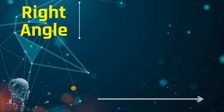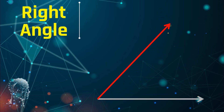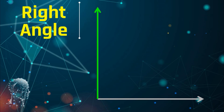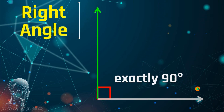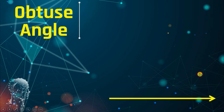Next, we have the right angle. A right angle is an angle with a measure of exactly 90 degrees. You will know it is a right angle because of the special square symbol you will see — it looks like a small square at the corner. That is your right angle.